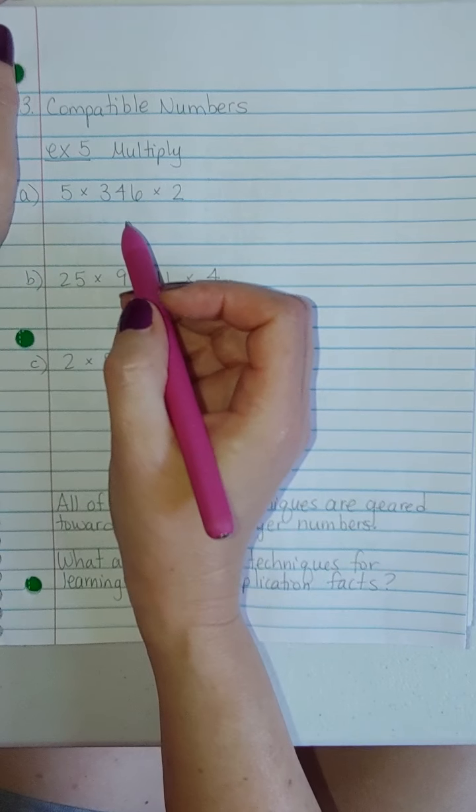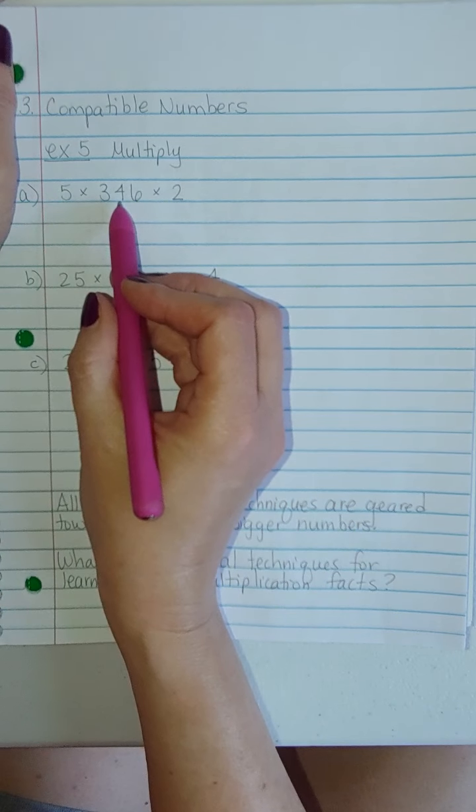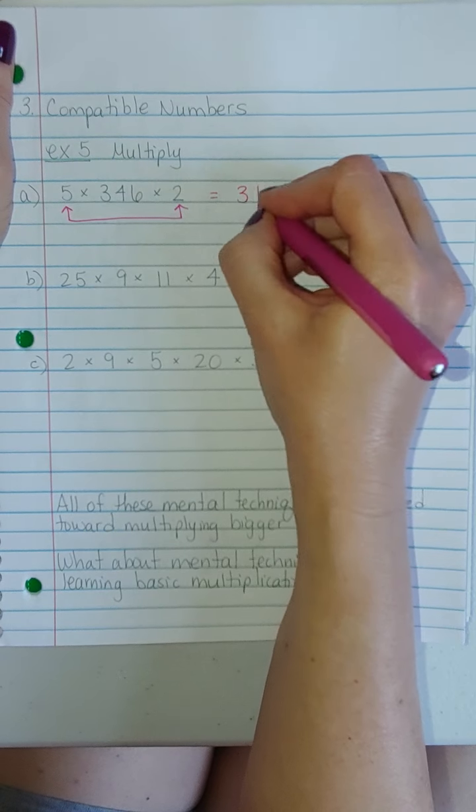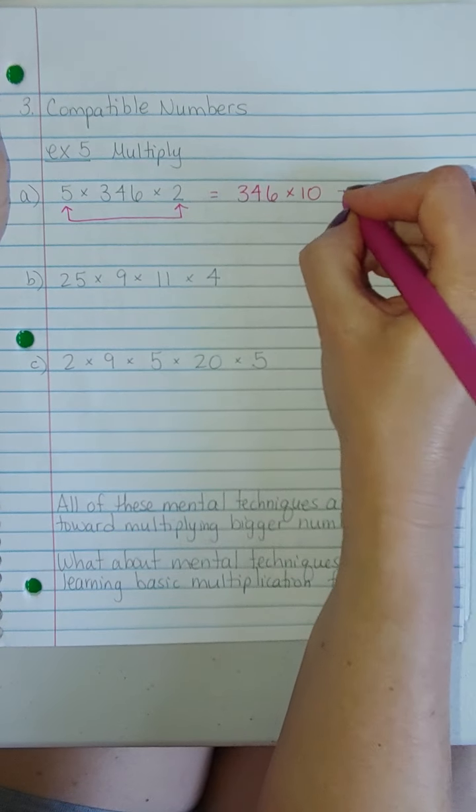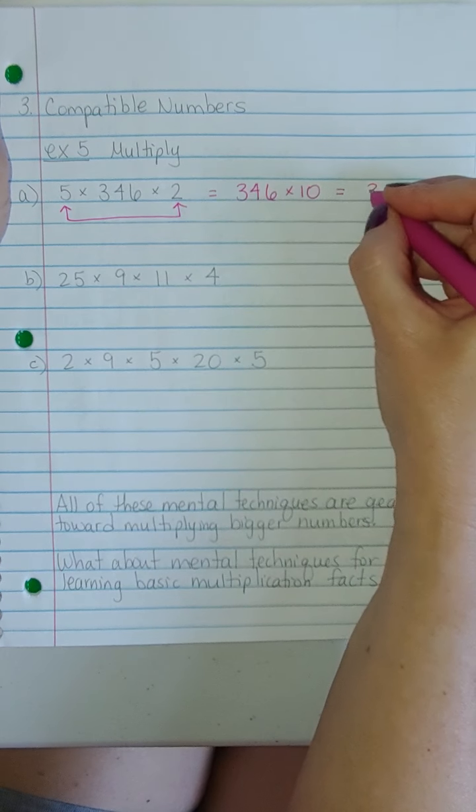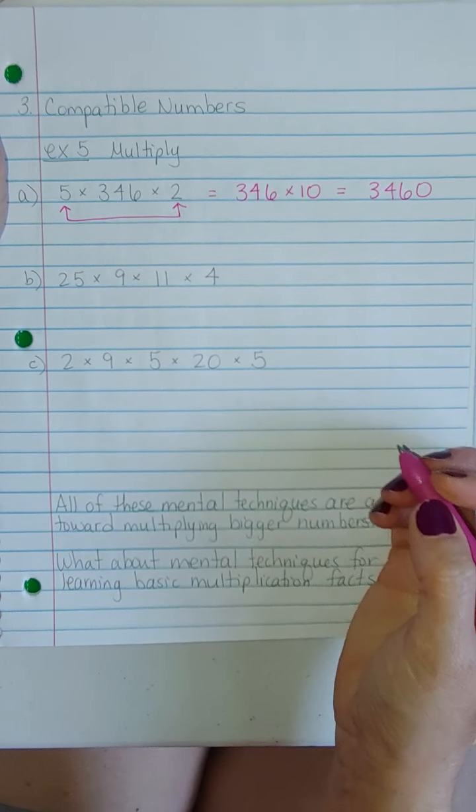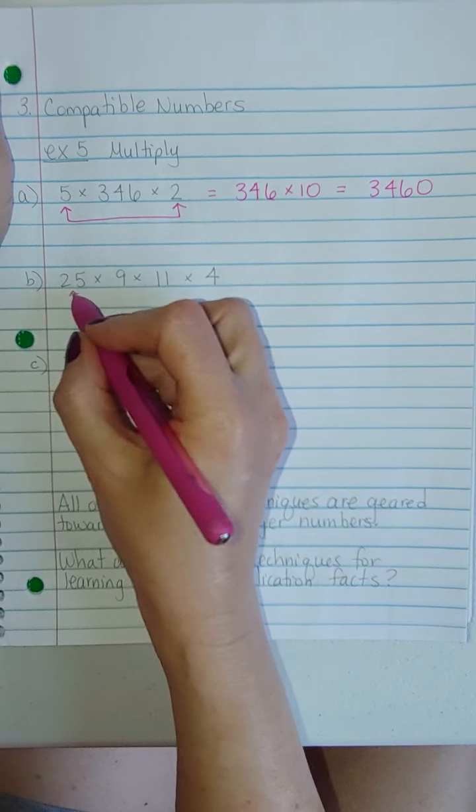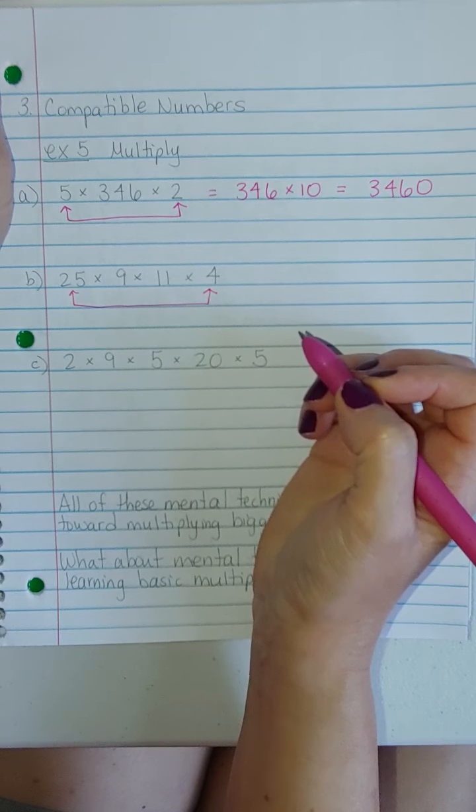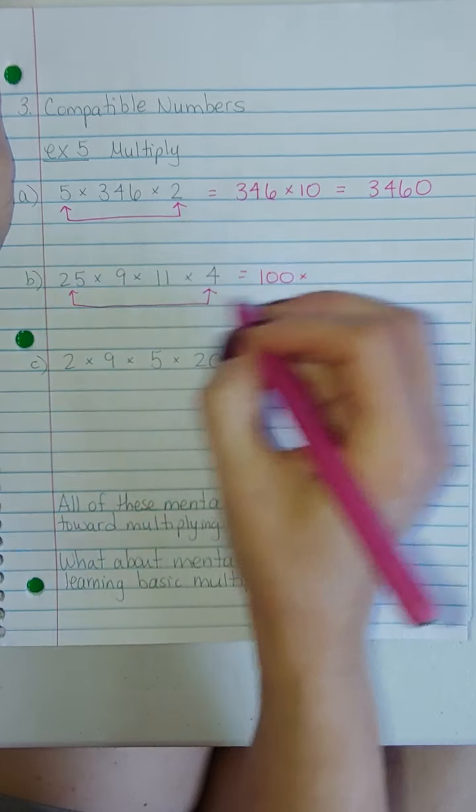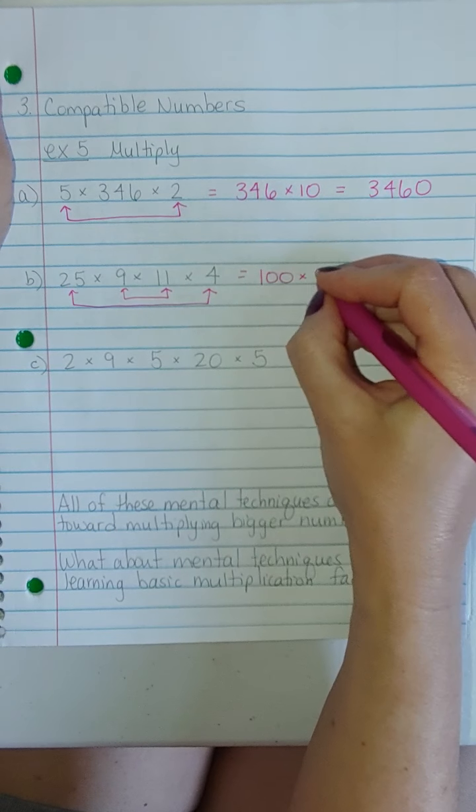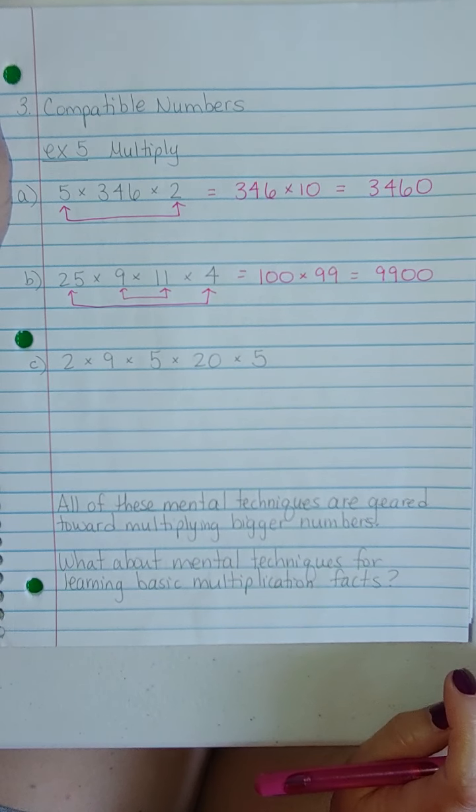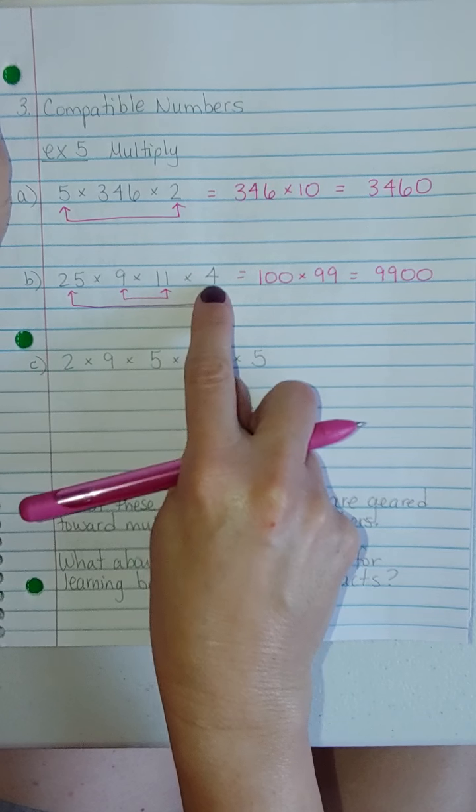All right, so I doubt very seriously that you would multiply this in your head, right? I would group the 5 and the 2 together and get 10. That way this is 346 times 10. And it's pretty easy to multiply by 10, right? Because all you got to do is add a 0. So you get 3460 out of it. This one, I would group the 25 and the 4 together and get 100. And then the 9 times 11 and get 99. So those are compatible numbers. Not so much the 9 and 11, but the 25 and the 4. Those are definitely the compatible ones.